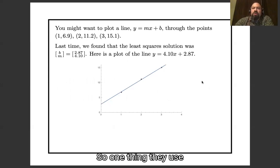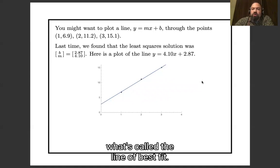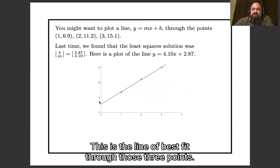So one thing that you use least squares for is to draw what's called the line of best fit. This is the line of best fit through those three points.